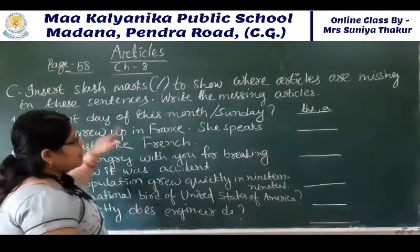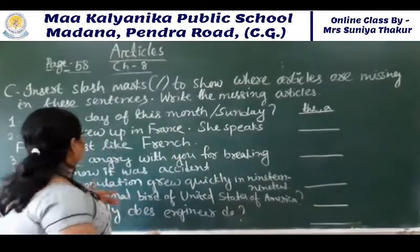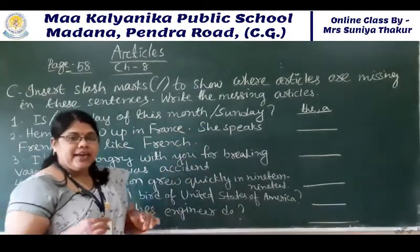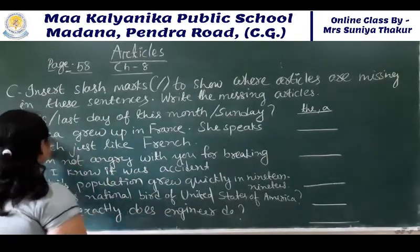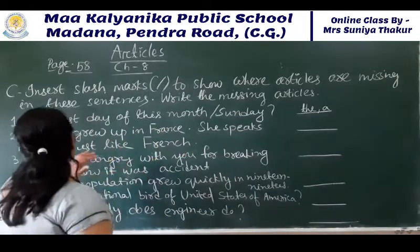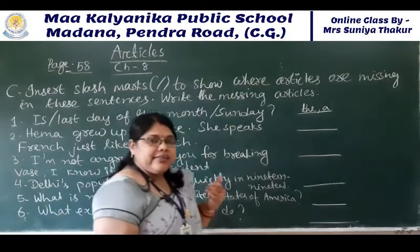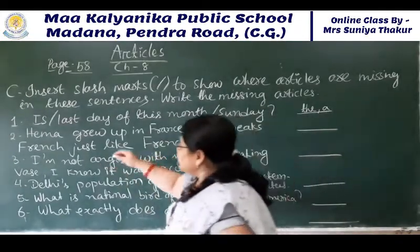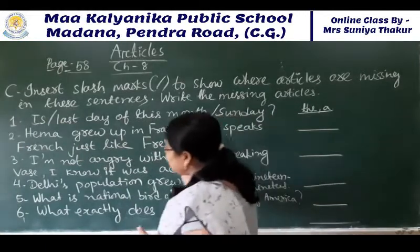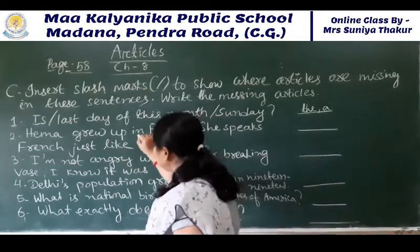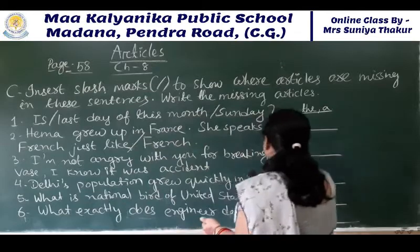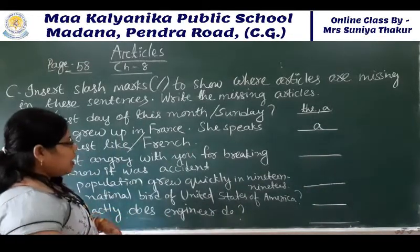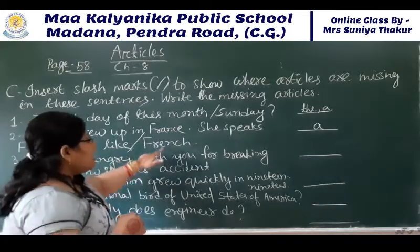The 'the' is for the first place and 'A' is for the second. How to read the sentence? 'Is the last day of this month a Sunday?' Now look at this sentence: 'Emma grew up in France. She speaks French just like a French person.' When the article is missing, we have to put a slash and write the article here. We put a slash and write A here.